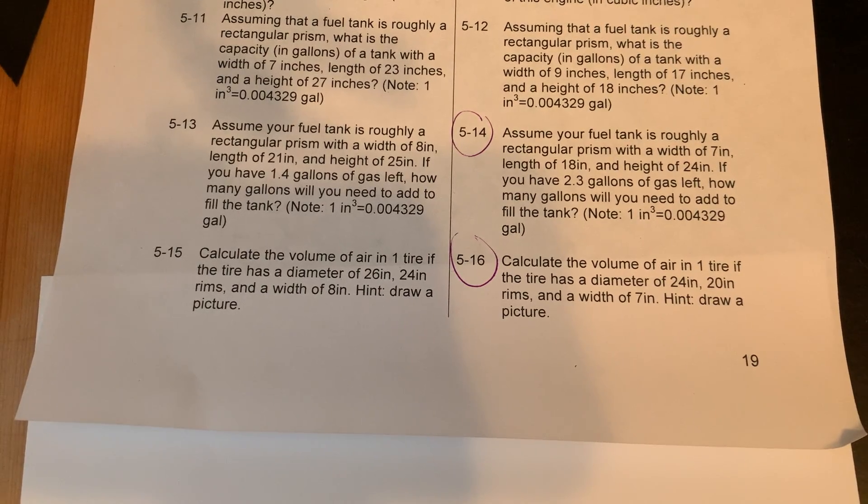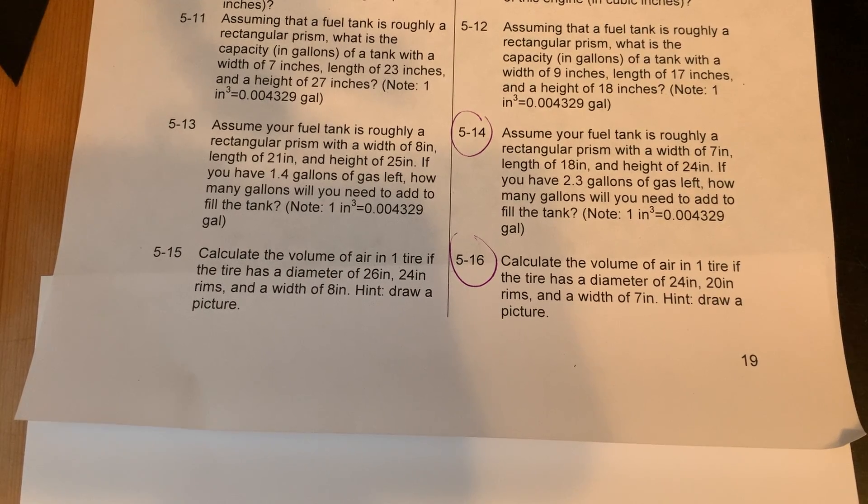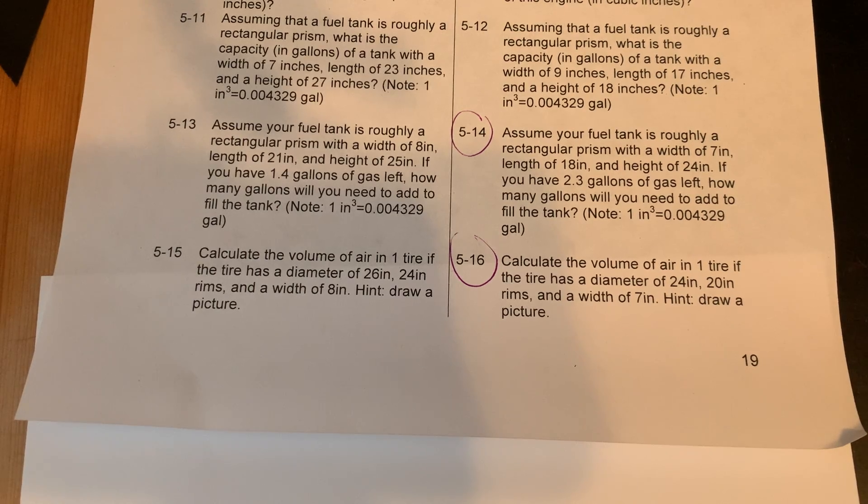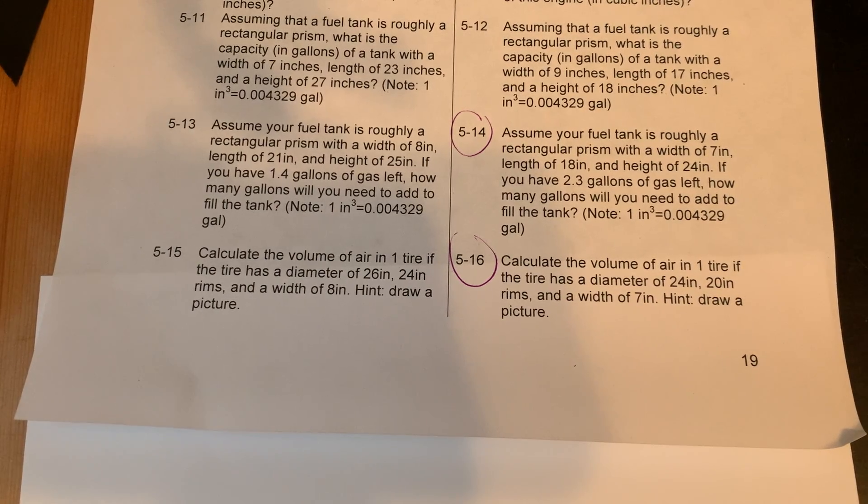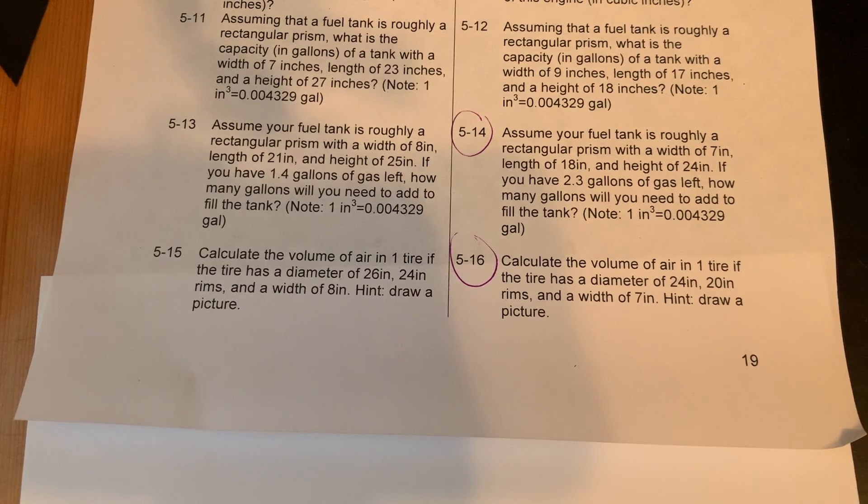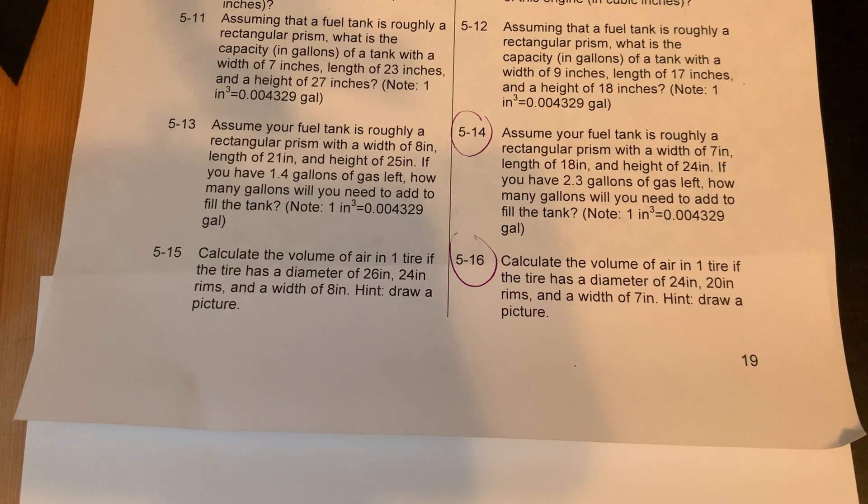This question is asking us to calculate the volume of air in a tire if the tire has a diameter of 24 inches, the rims have a diameter of 20 inches, and the width of the tire is 7 inches. The hint they're giving us is draw a picture.